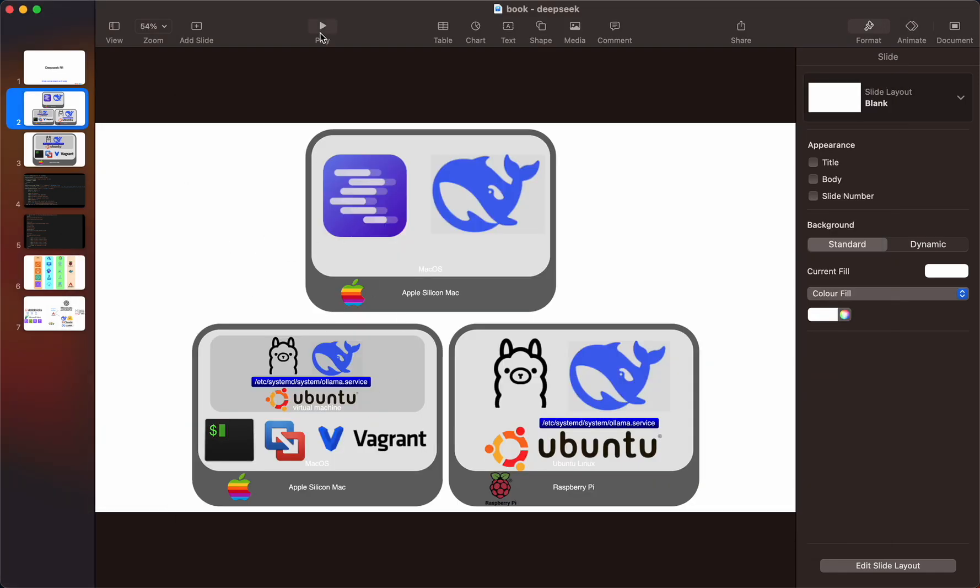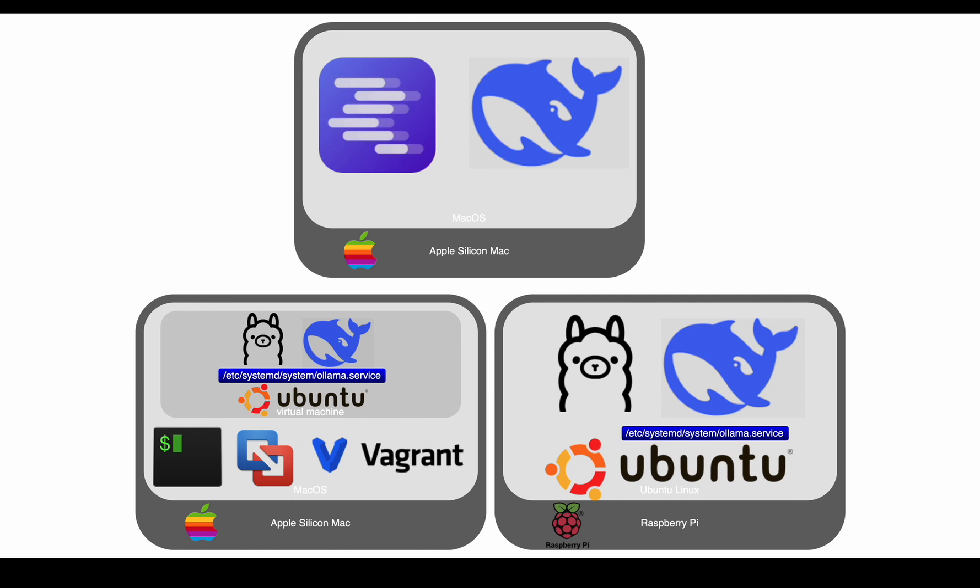So what we've done is got LM Studio with DeepSeek running on the Apple Silicon Mac. Now on the virtual machine we're going to have the usual iTerm and Vagrant with VMware as the provider, and instead of Docker this time we're going to run Ollama. We're going to create an Ollama configuration file and install the DeepSeek model.